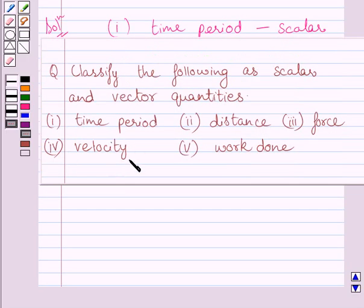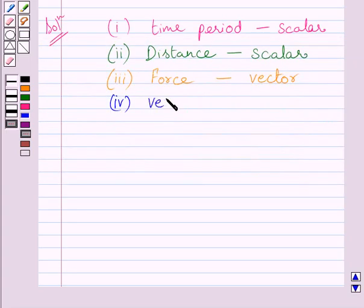Now fourth part is velocity. Now we know velocity has magnitude as well as direction. So it is a vector quantity.